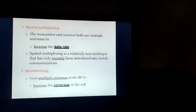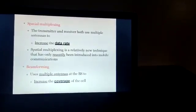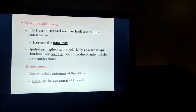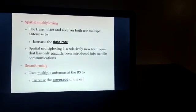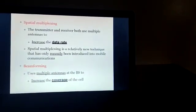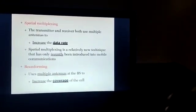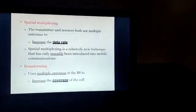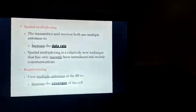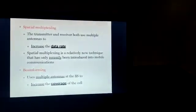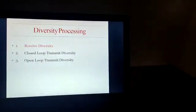In spatial multiplexing, the transmitter and the receiver both use multiple antennas to increase the data rate. Spatial multiplexing is a new technique, since it has been recently introduced into mobile communication. Beamforming uses multiple antennas at the base station in order to increase the coverage of the cell.